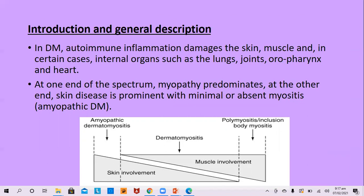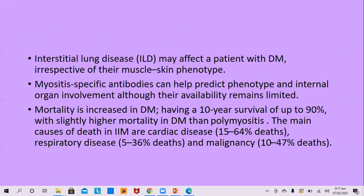In dermatomyositis, autoimmune inflammatory damage affects the skin, muscle, and in certain cases internal organs such as lung, joint, oropharynx, and heart. Interstitial lung disease is one of the common complications, affecting patients irrespective of muscle or skin phenotype. Myositis-specific antibodies can predict the phenotype and internal organ involvement, although such antibodies are not readily available in all laboratories.